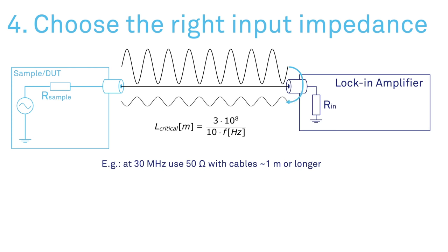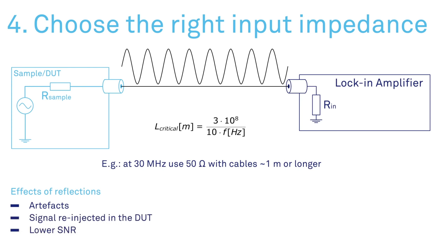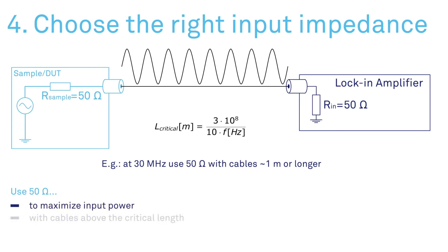...selecting a 50 ohm impedance matching prevents reflections in the circuit which otherwise result in increased noise and less power into the lock-in input, all leading to a drop of signal-to-noise ratio.